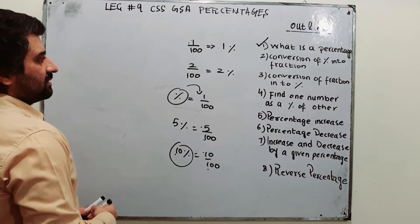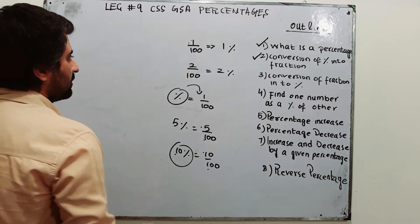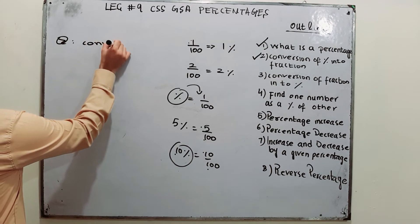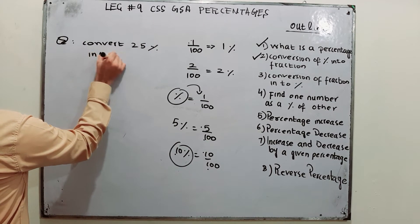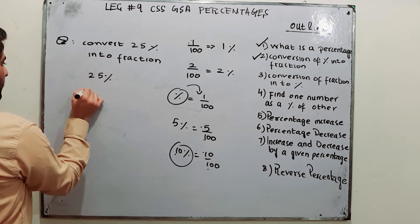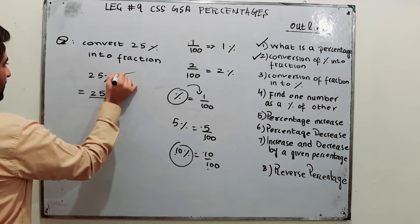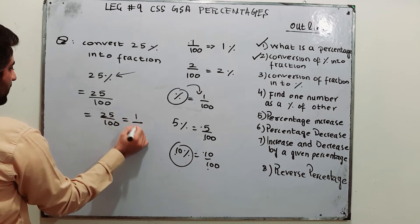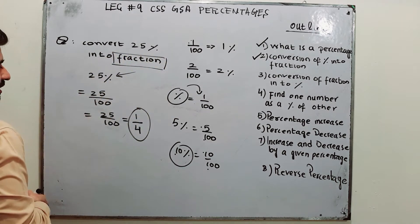The next section is conversion of percentage into fraction. Let us take an example: convert 25% into a fraction. Very simple — write 25%, and when you remove the percent sign, divide by 100. That gives you 25 over 100, which simplifies to 1 over 4. This is your required fraction.